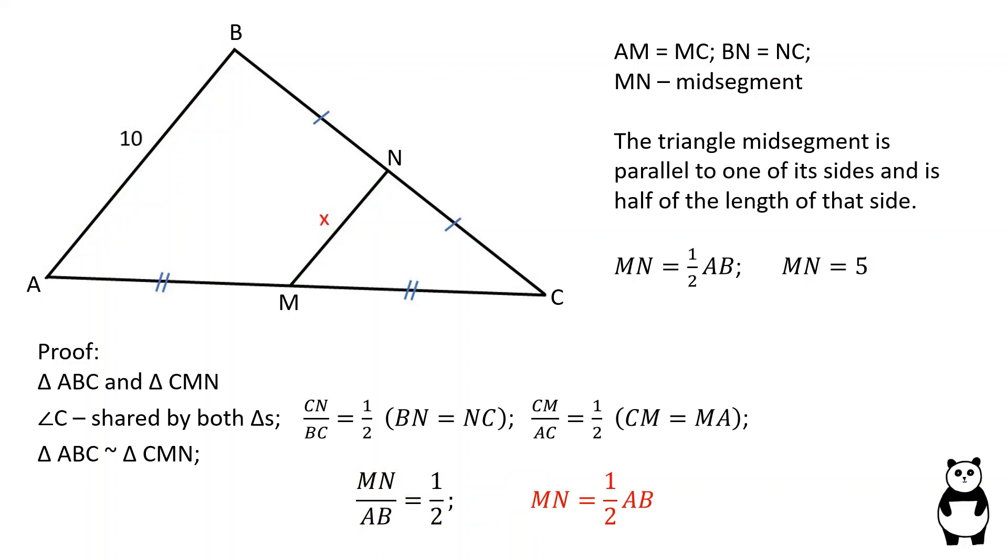Therefore, MN is equal to half of AB, which proves the triangle mid-point theorem.